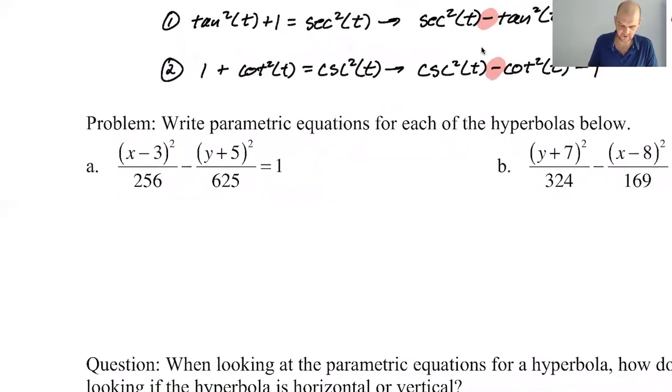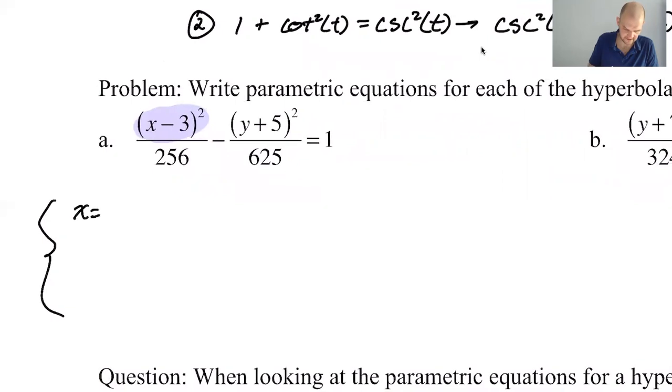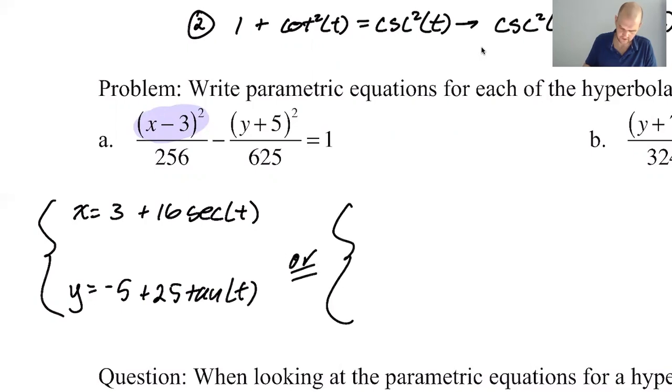Since x goes first, in this case, if x goes first, it must go with secant when we write our equation. So the center is 3, negative 5. x came first, so it has to go with secant. I'm going to say x equals 3 plus 16 secant of t. And then y came second, so it's going to go with tangent, y equals negative 5 plus 25 tangent of t.